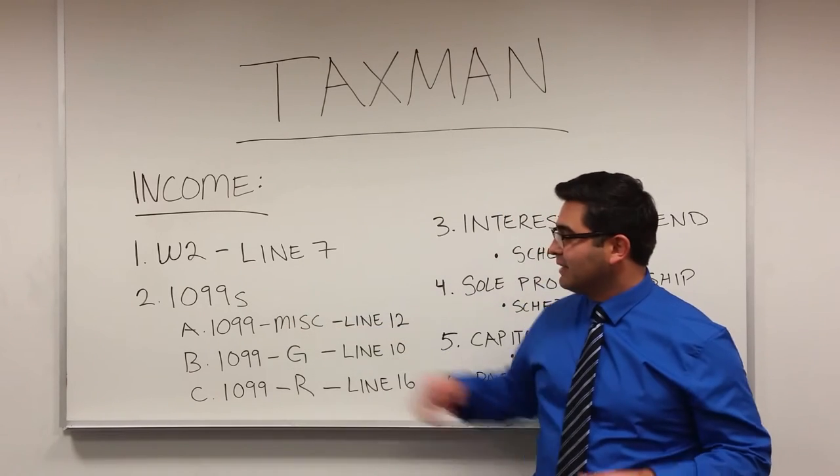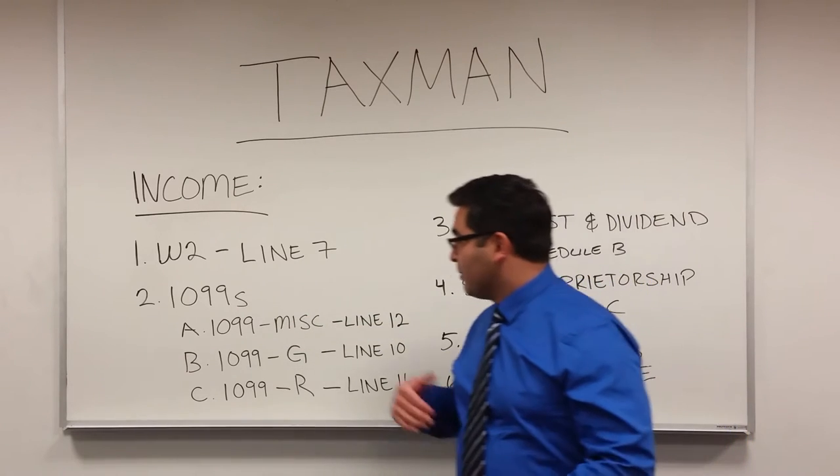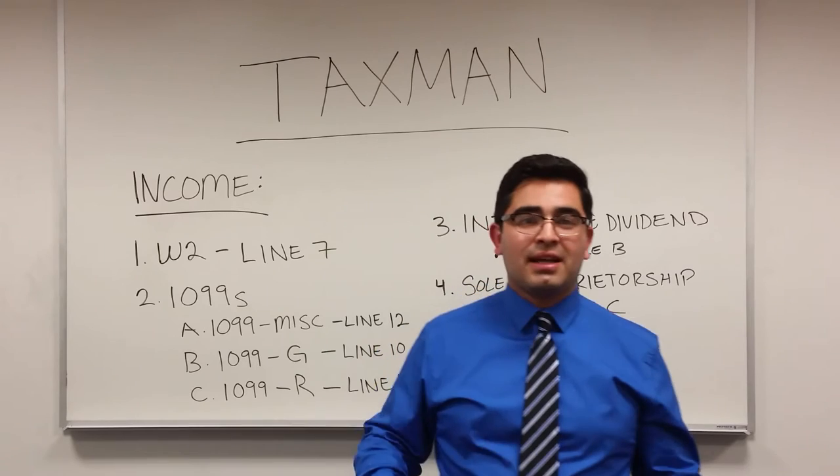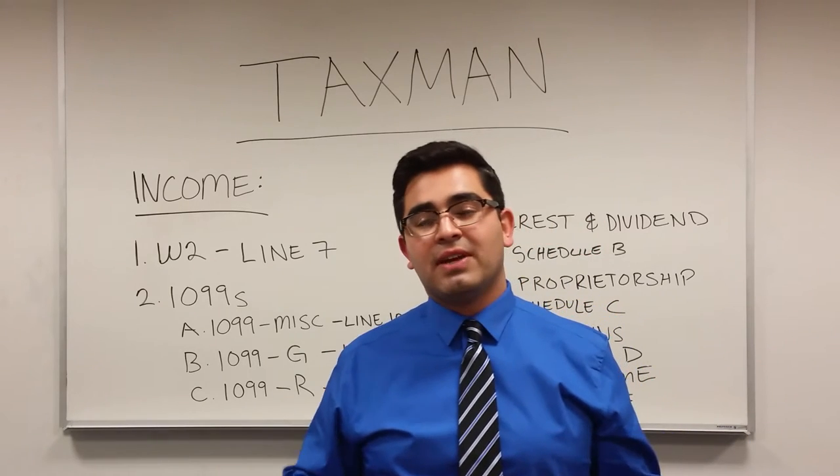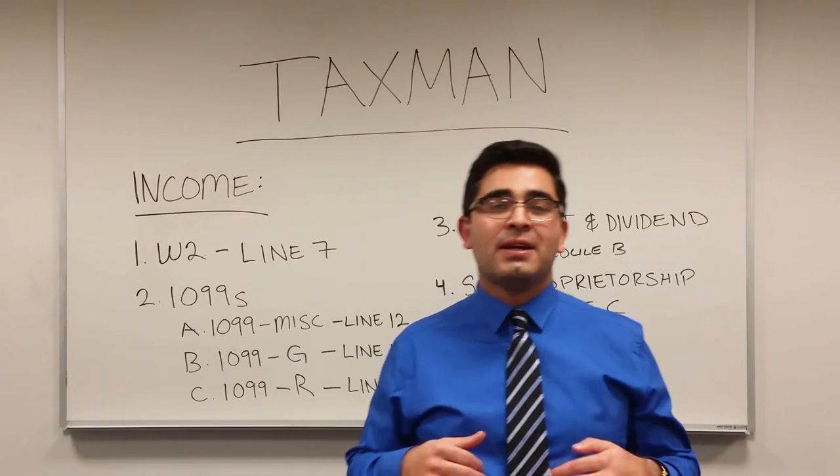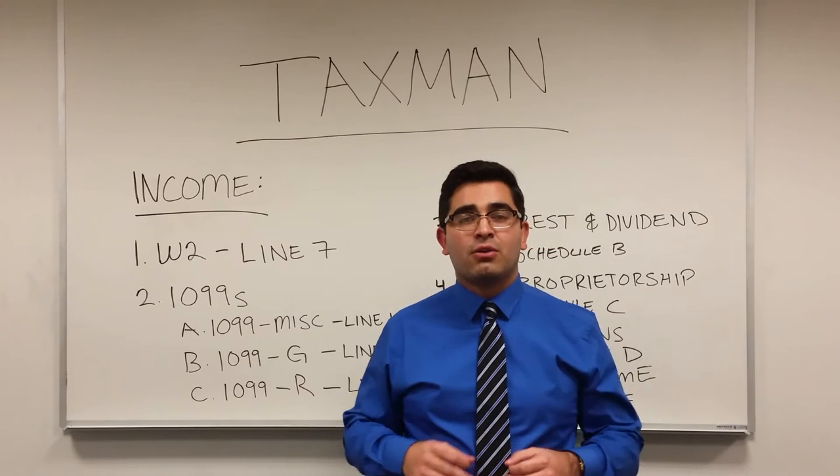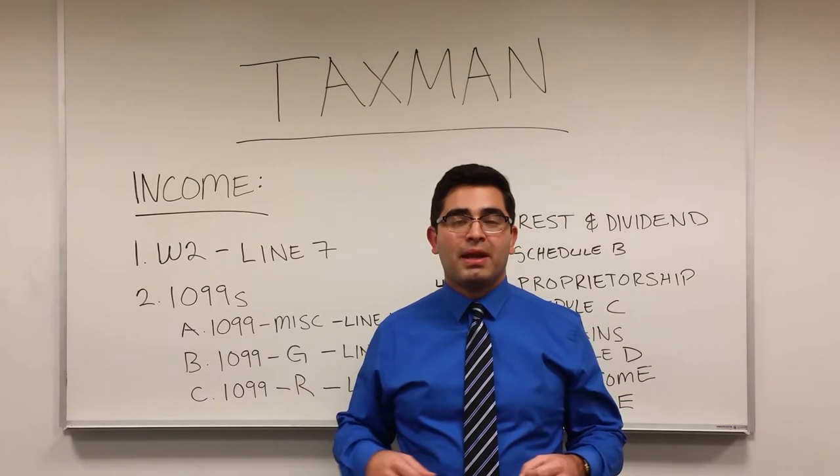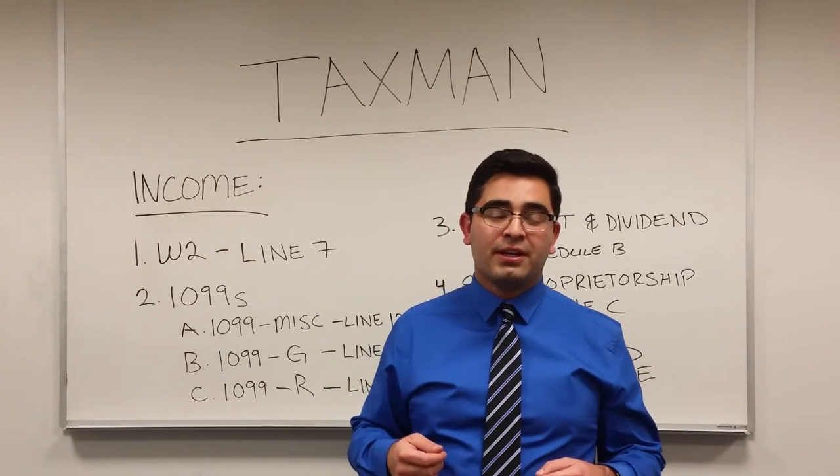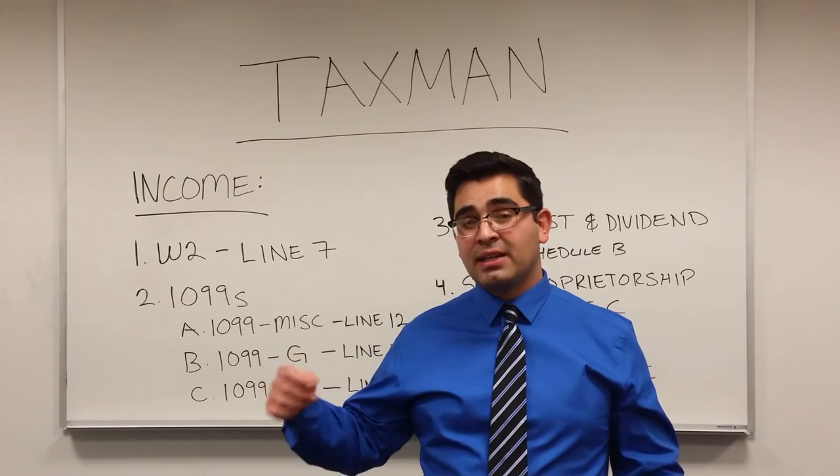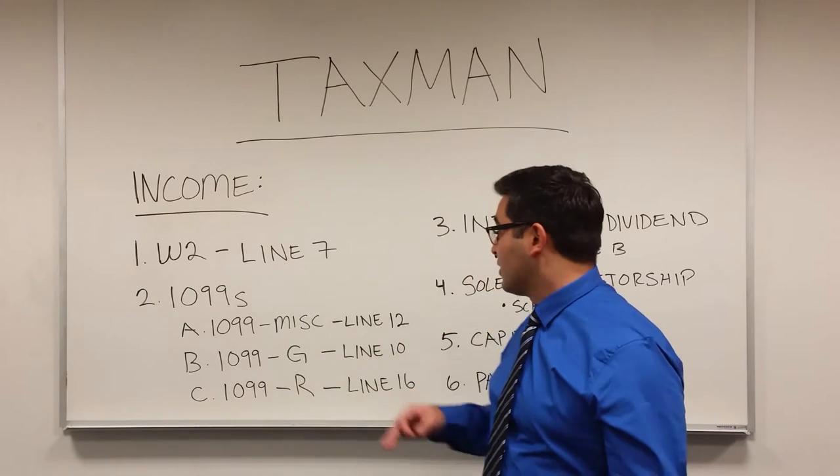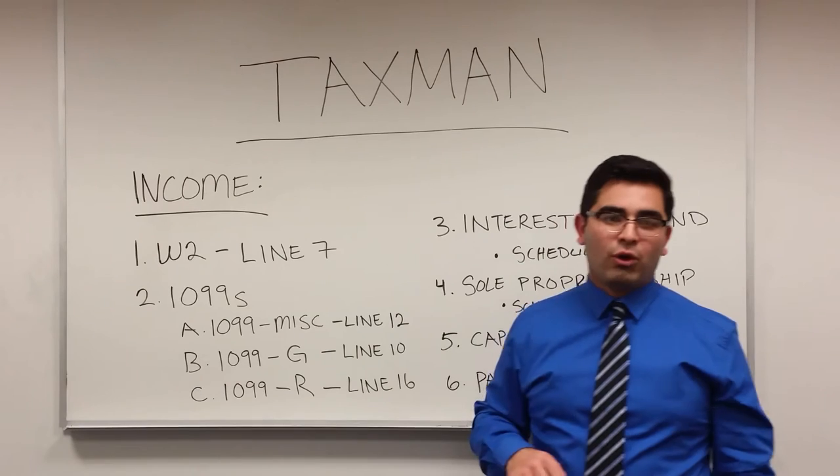Next, number 2 is 1099s. The most common 1099 is the 1099-Miscellaneous, and you receive a 1099-Misc if you are a sole proprietor or an independent contractor and are paid more than $600 throughout the year. That is reported on line 12 of the 1040.